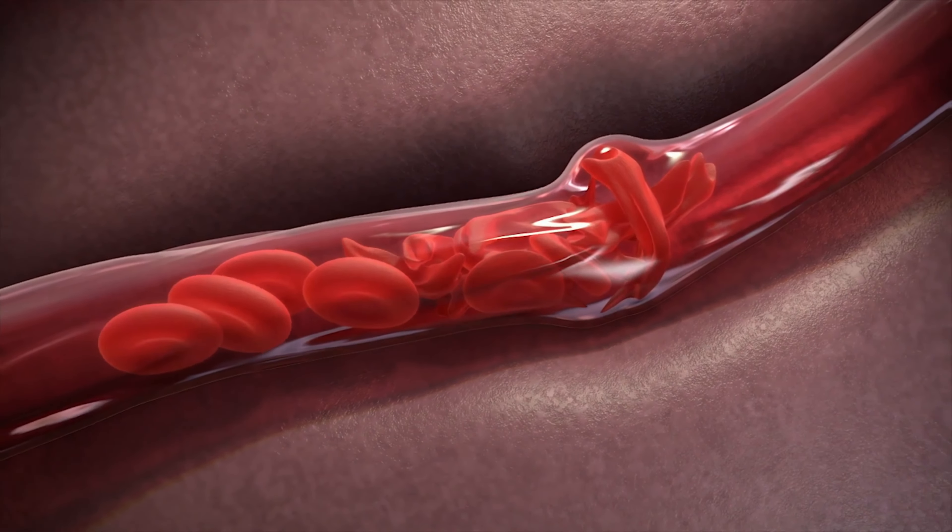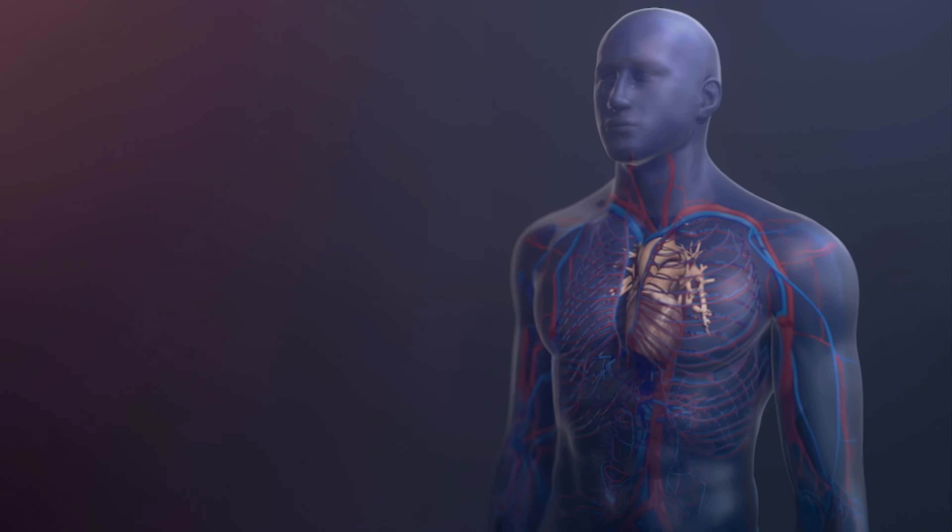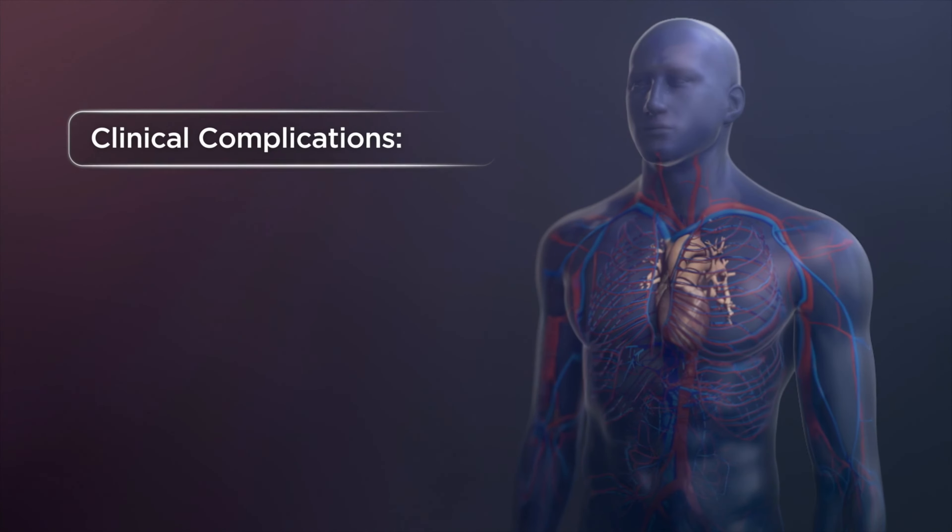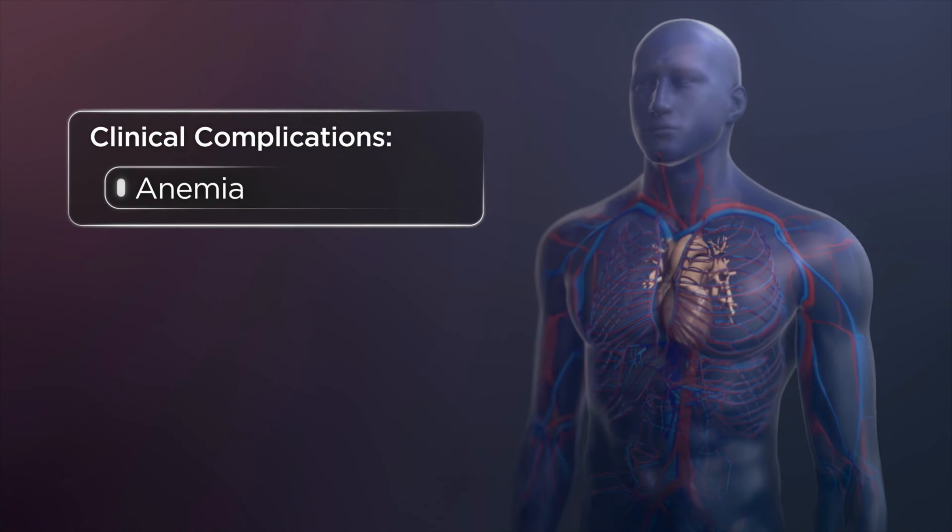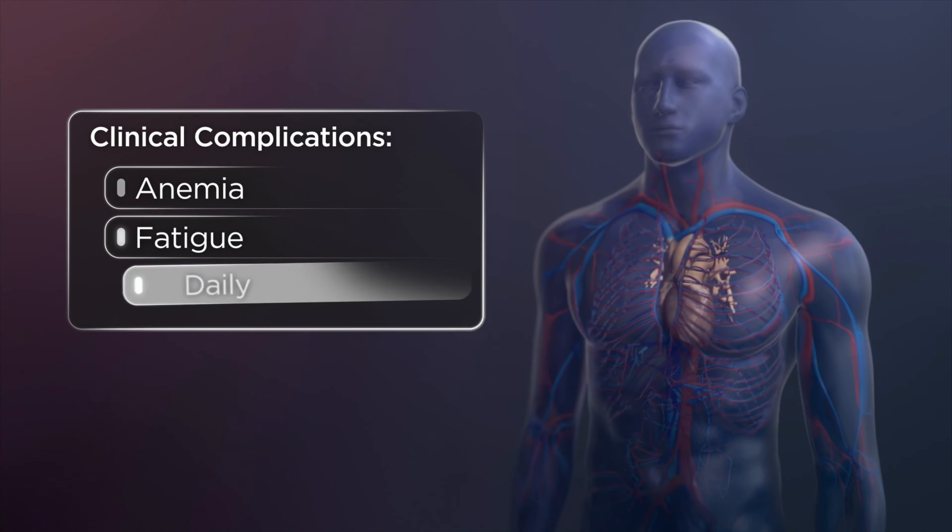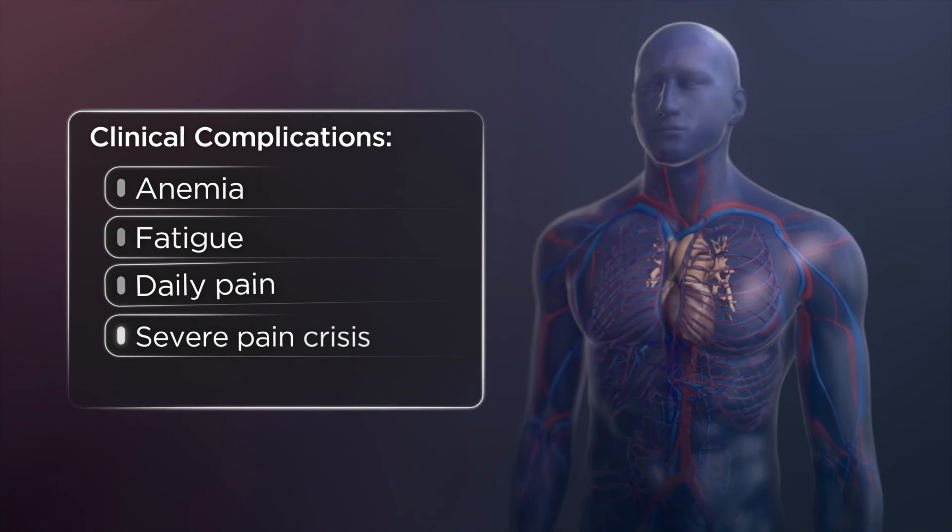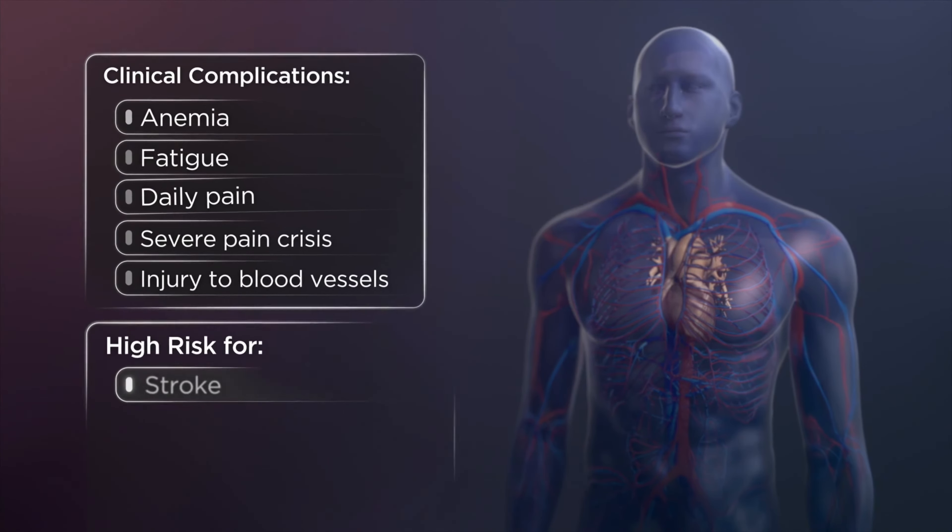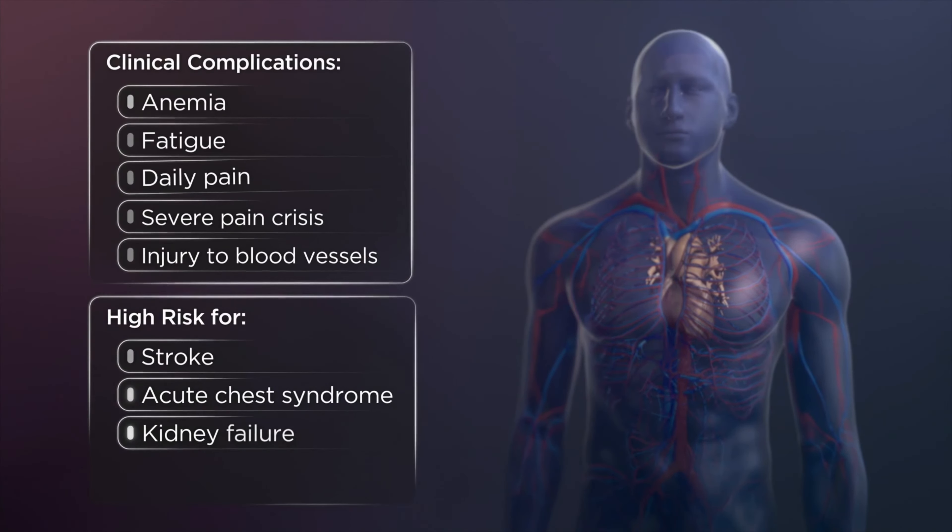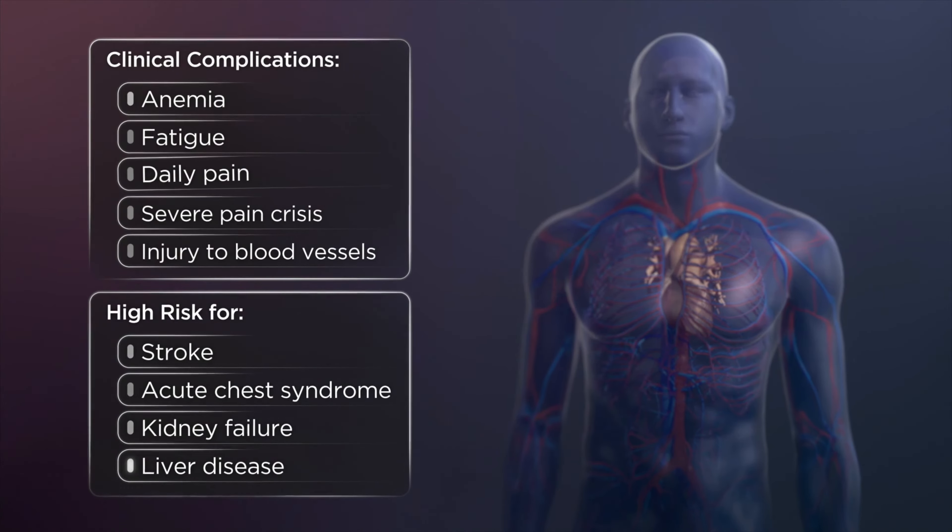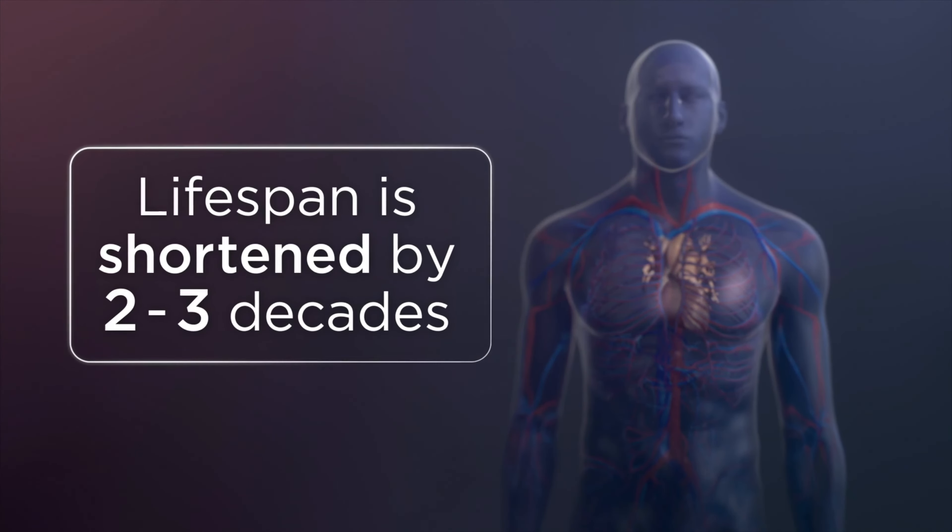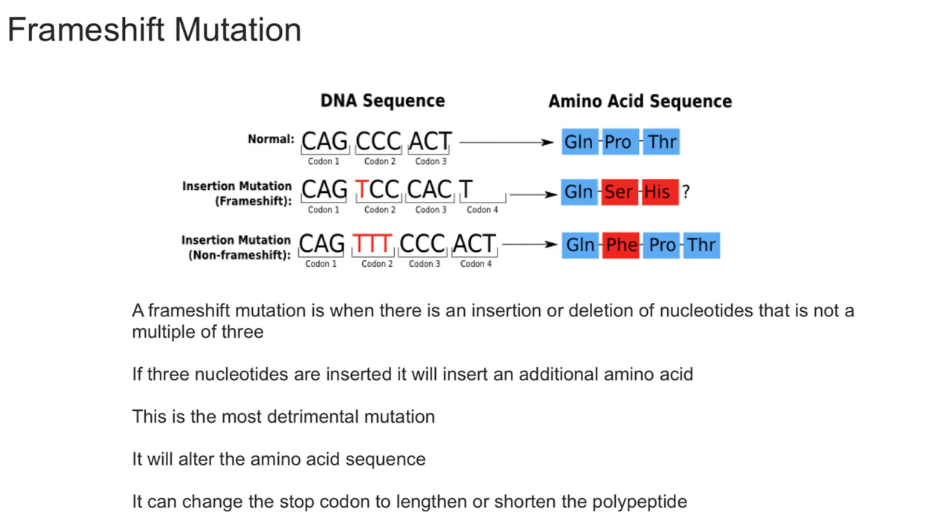The rigid, misshapen blood cells do not carry oxygen well, and they also tend to clog capillaries, causing an affected person's blood supply to be cut off to various tissues, including the brain and the heart. Therefore, when an afflicted individual exerts himself or herself, even slightly, he or she often experiences terrible pain and might even undergo heart attack or stroke, all because of a single nucleotide mutation.